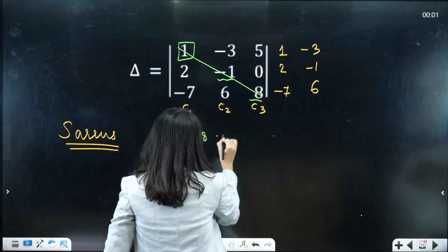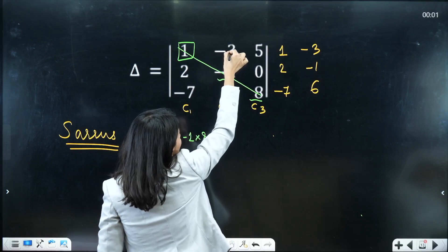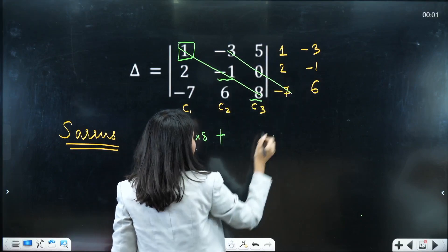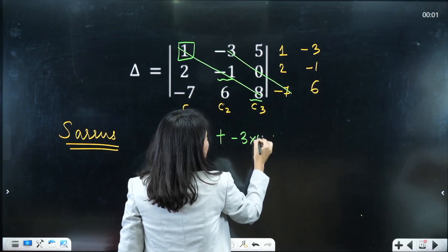Now next, apply a positive sign. Now start with minus 3, 0 and minus 7. So minus 3, 0 and minus 7.